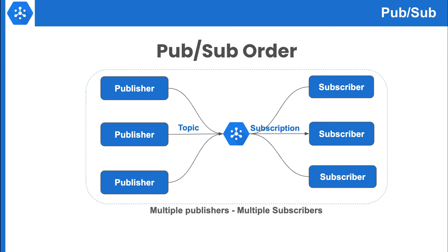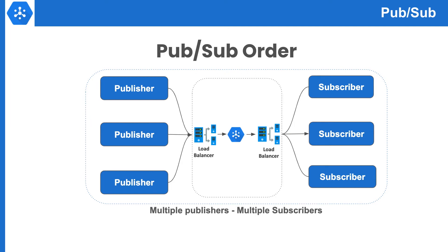If we go a little bit deeper, PubSub has a very complex architecture inside that contains multiple servers, multiple load balancers, and a storage system. So a single message can travel through any load balancer and any server, which makes it even more difficult to maintain order.